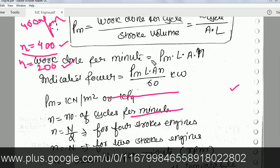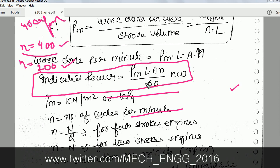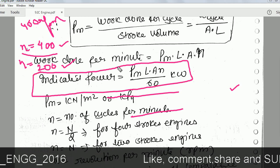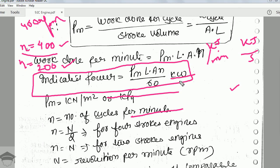One more important formula is indicated power. Indicated power equals work done per second, which is Pm × L × A × n divided by 60, giving units of kilowatts. This is because Pm × L × A × n is in kilojoules per minute, and dividing by 60 converts it to kilojoules per second, which equals kilowatts. The unit of mean effective pressure is generally taken in kilopascal.